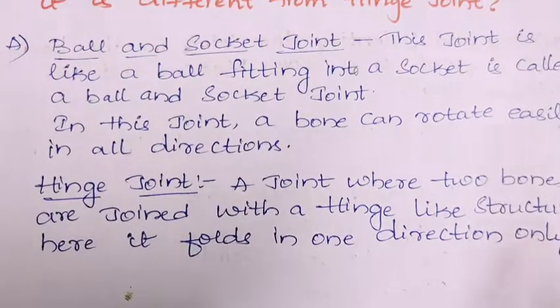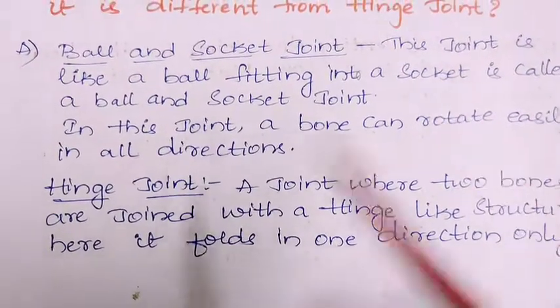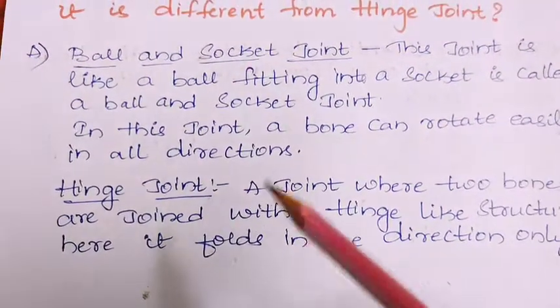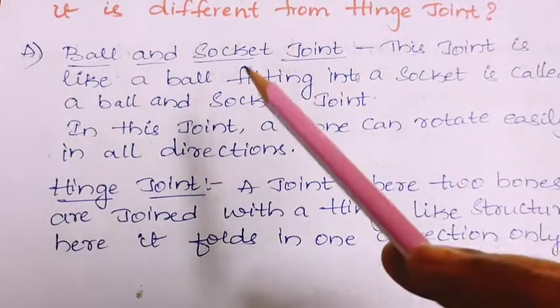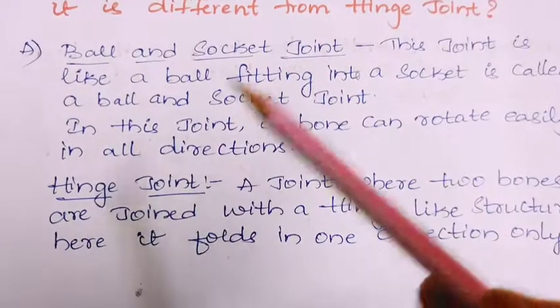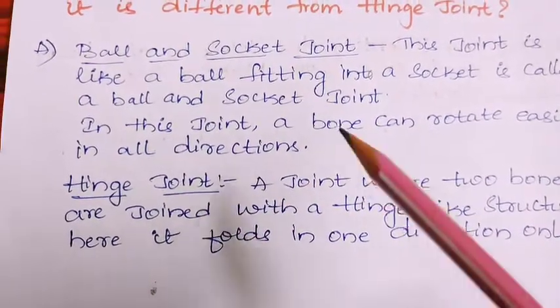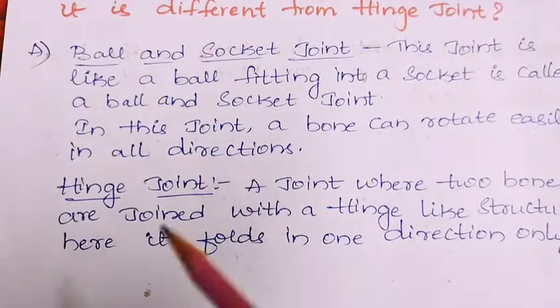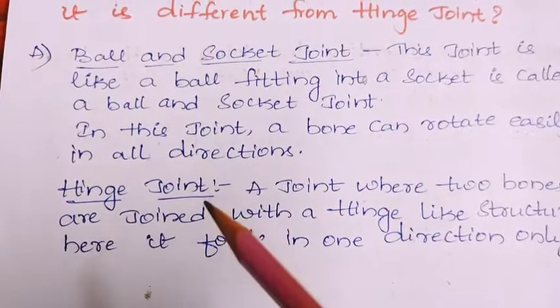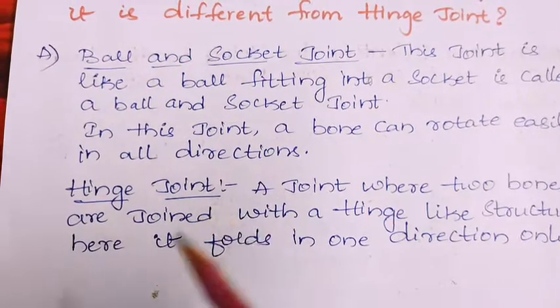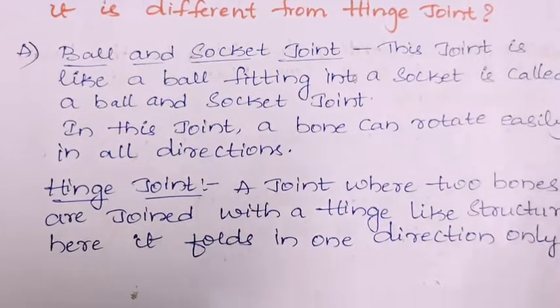So the difference is: a ball and socket joint can rotate or move in all directions, while a hinge joint moves only front and back — that is, open and close.